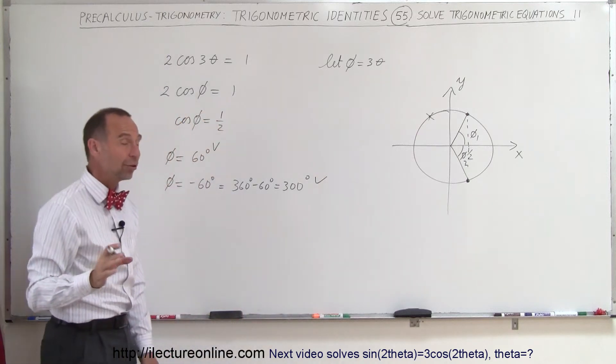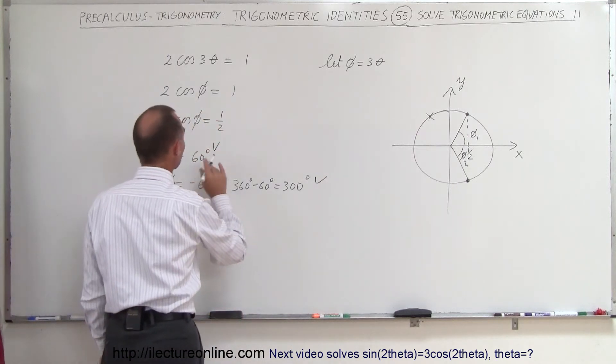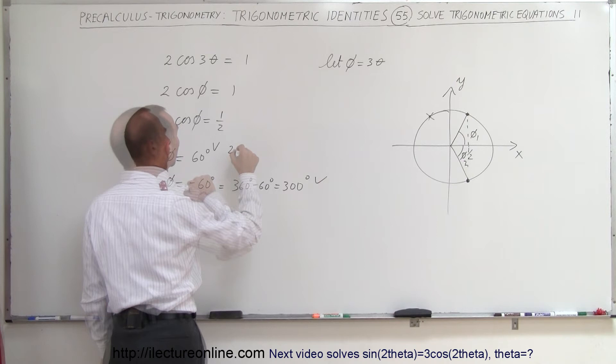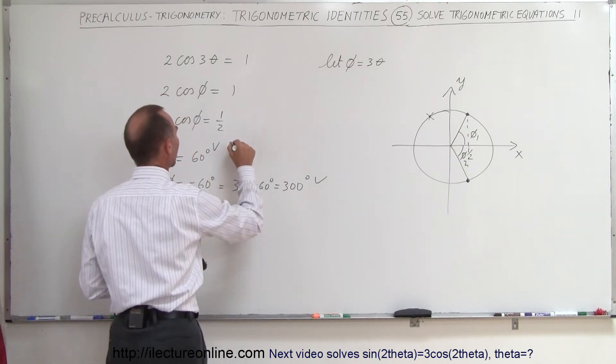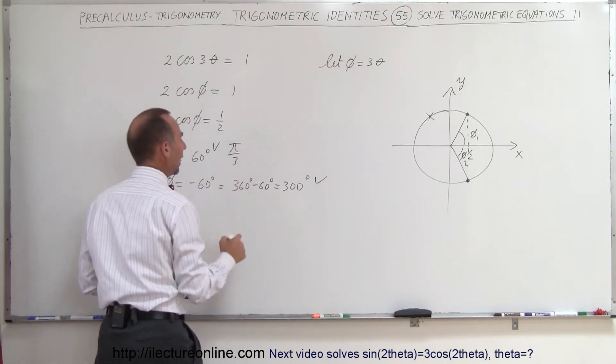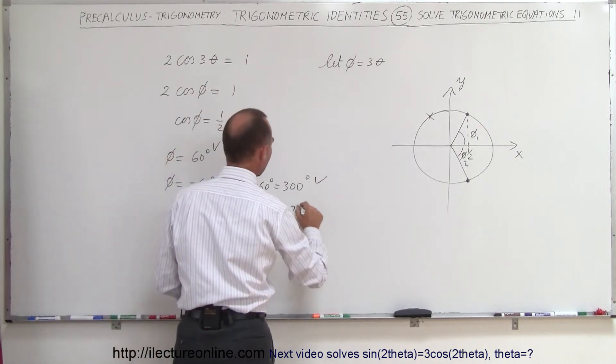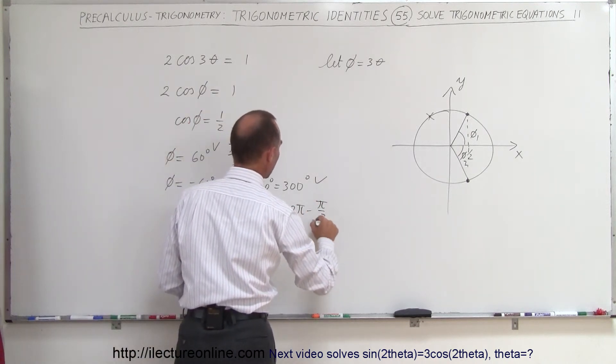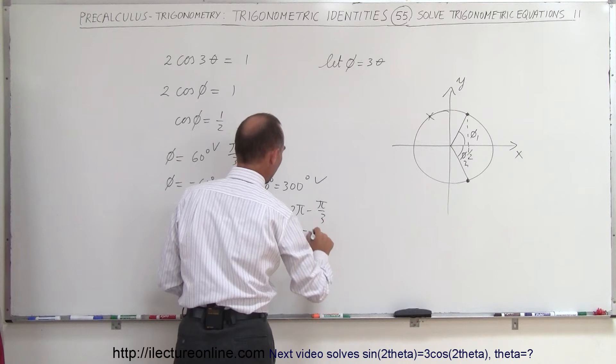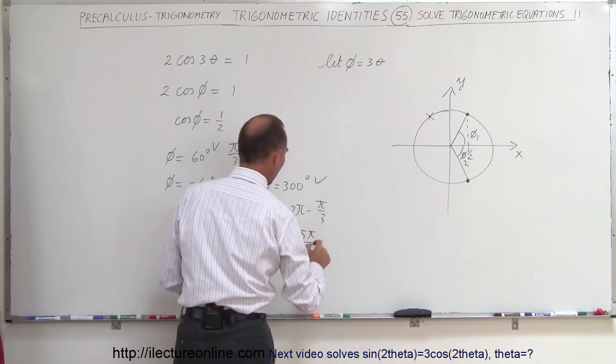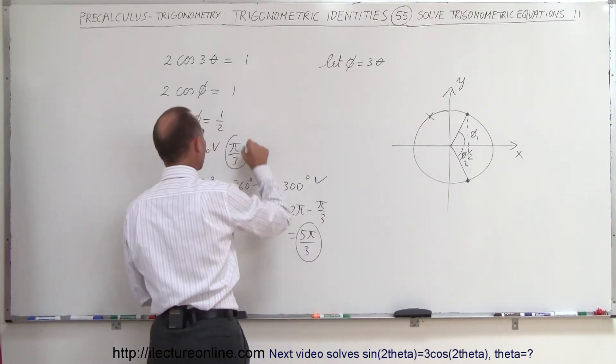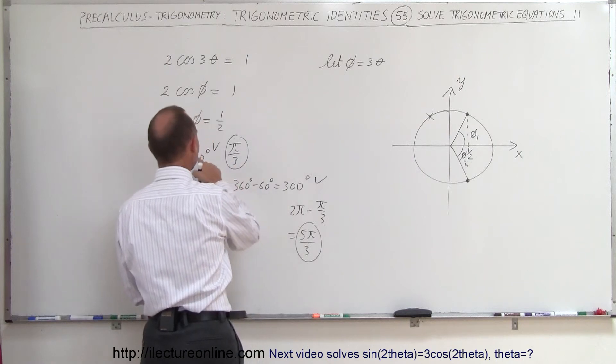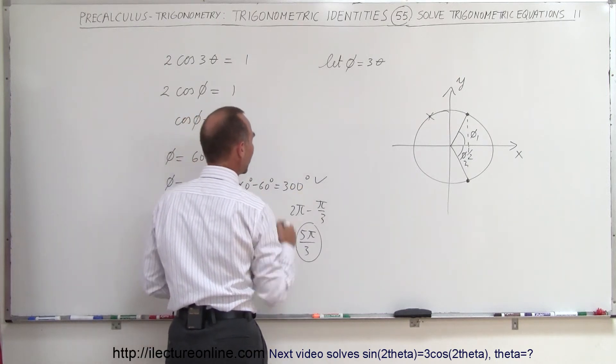If you want to convert that into radians, of course, 60 degrees is 1 third pi. So, pi over 3. And this would be equal to 2 pi minus pi over 3, which is equal to 5 pi over 3. So, this and this are the two answers in radians. This and this are the two answers in degrees.